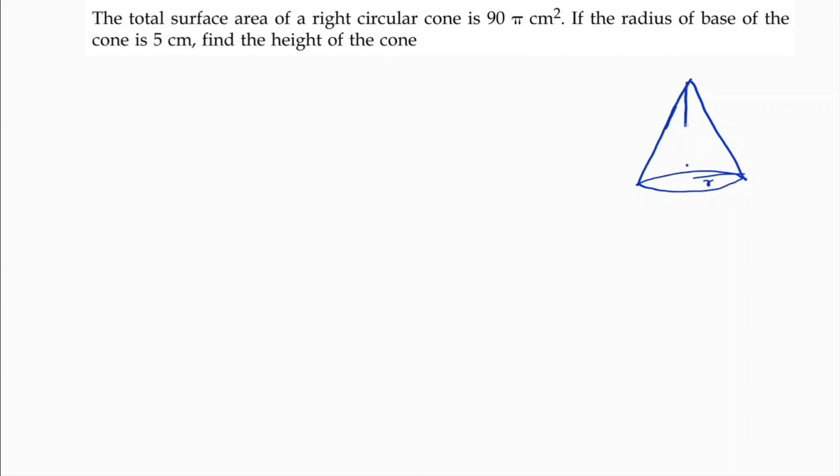This is the radius and this is the height. The radius is given as 5 centimeters. We need to find the height. Now, for the total surface area of a right circular cone...